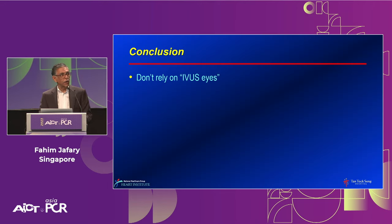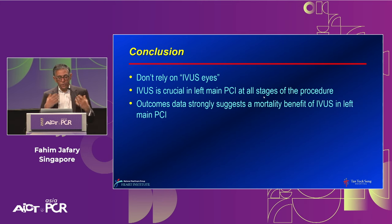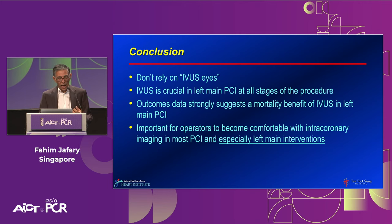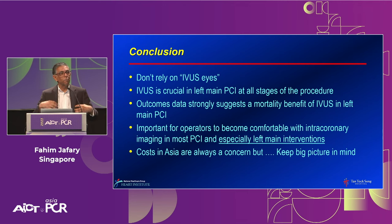In conclusion: don't rely on IVUS eyes. IVUS is critical in most PCIs, in particular left main PCI, at all stages — before, during, and after the procedure. The outcomes data strongly suggests a mortality benefit of IVUS in left main PCI. It is important for operators to become facile and comfortable with intravascular imaging. Costs in Asia are always a concern, but look at the big picture: when you image and do your PCI properly, patients will not have to come back with recurrent events — and that is cost-saving. Thank you.